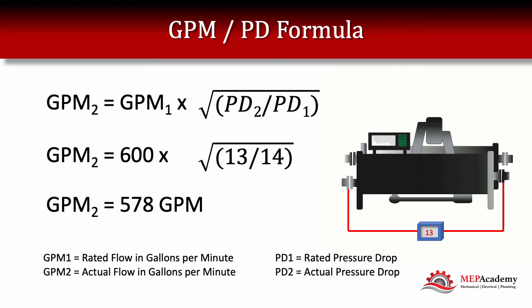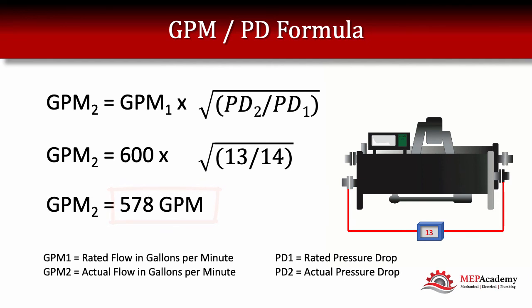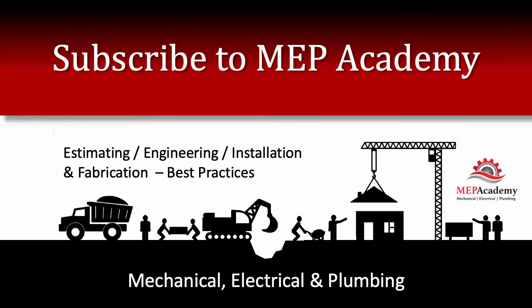All we have to do at this point is the math. Doing the math, we come up with 578 GPM. So our 600 GPM at 14 feet pressure drop rated condition is now only flowing 578 GPM due to the decrease in pressure drop. A decrease in pressure drop equals a decrease in GPM. Subscribe for additional videos — we will be covering mechanical, electrical, and plumbing estimating, engineering, installation, and fabrication best practices for mostly commercial construction and some residential.